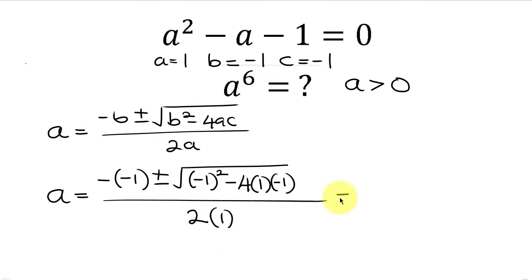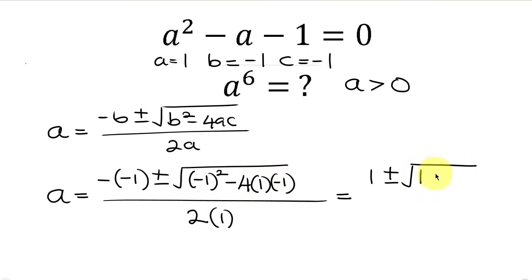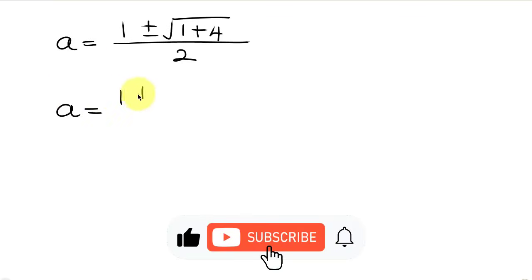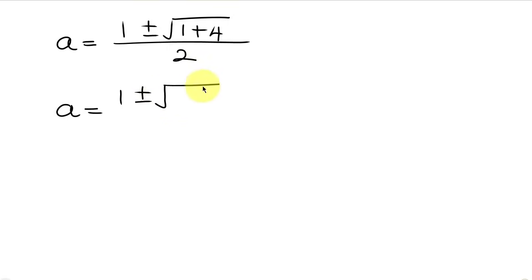Simplifying: negative times negative is positive, so we get positive 1. Then plus or minus the square root of: negative 1 squared is 1, and negative 4 times 1 times negative 1 gives plus 4. So we have 1 plus or minus the square root of 1 plus 4, which is 5, all over 2.